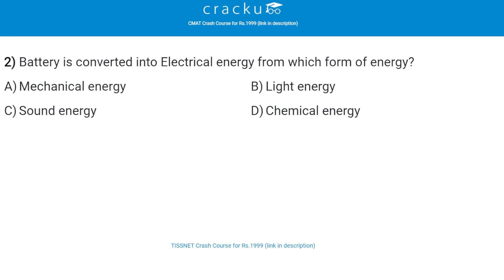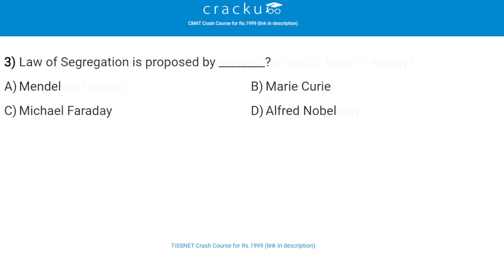Next: a battery converts into electrical energy from which form of energy? The correct answer is chemical energy, that is option D. A battery converts chemical energy to electrical energy.